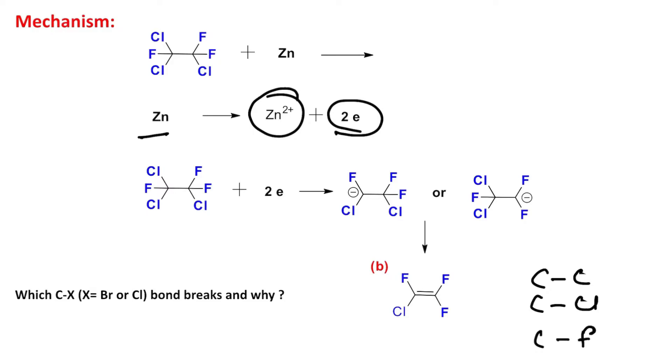If you look carefully, both C-Cl and C-F are polar with hetero atoms, but the C-Cl bond is weaker. Why? Because chlorine belongs to third row and fluorine belongs to second row.